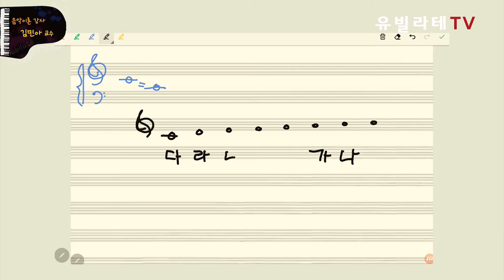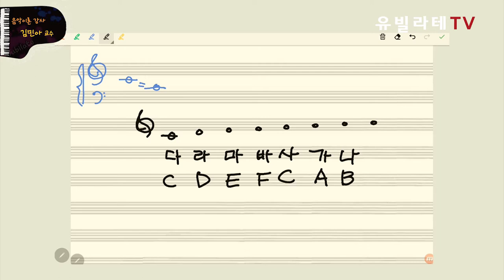그래서 한국말로도 가나다... 여기서부터 출발을 하죠. A부터 그리고 다라마바사 이렇게 가고, 마찬가지로 영어도 A부터 A, B, C, D, E, F, G 이렇게 가요. 도레미파솔라시도 나오죠?